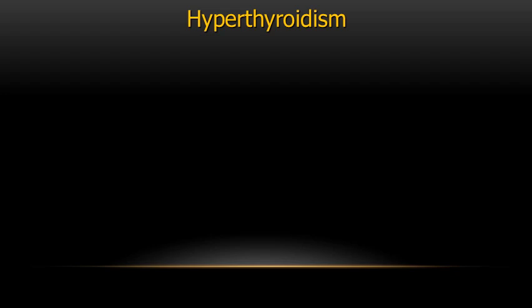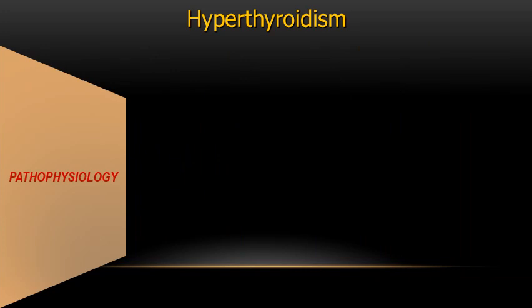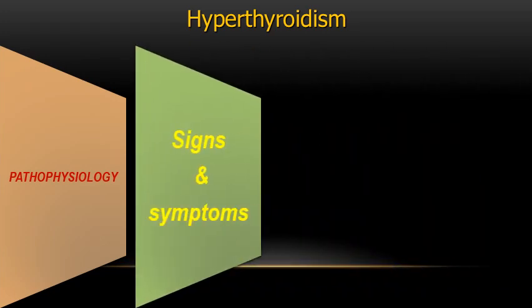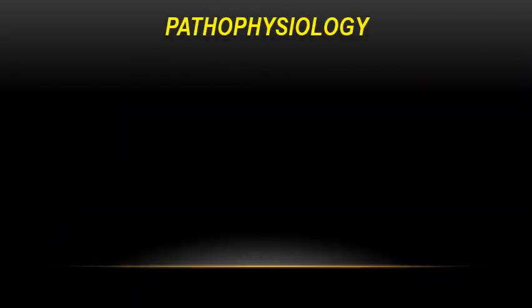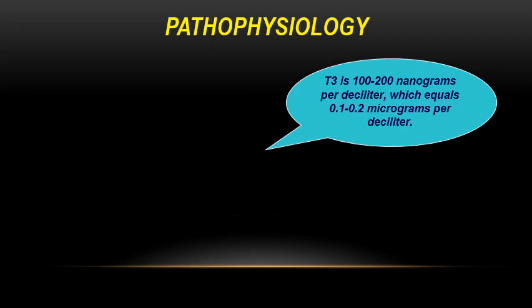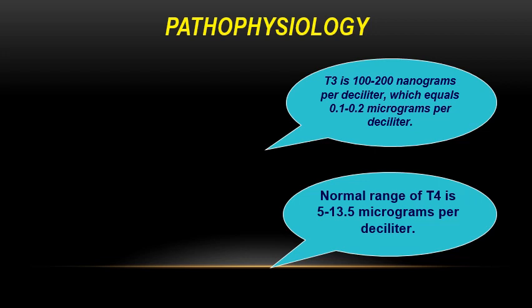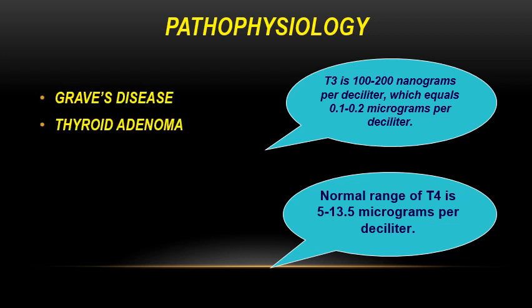Now let's discuss hyperthyroidism. It is characterized by an increase in circulating T3 and T4. Normal T3 is 100 to 200 nanograms per deciliter (0.1–2 micrograms per deciliter), and normal T4 (thyroxine) is 5 to 13.5 micrograms per deciliter. Both are increased in Graves' disease, multinodular goiter, or thyroid adenoma.